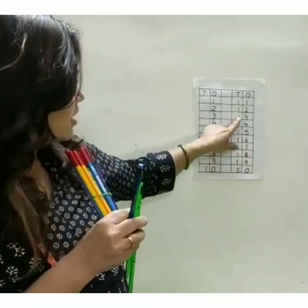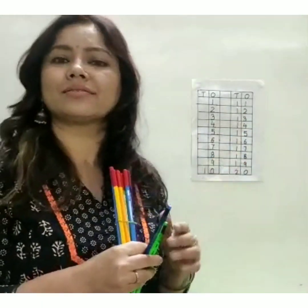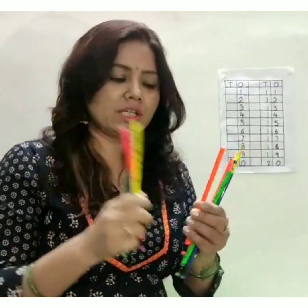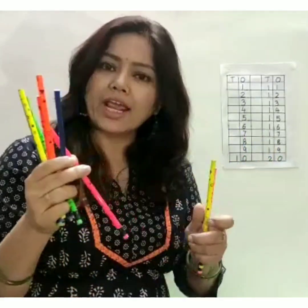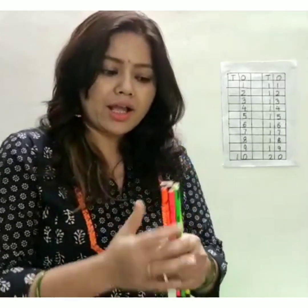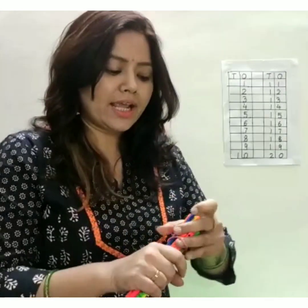Again we are going to count more objects and we will count after ten. So what comes after ten? Eleven, twelve, thirteen, fourteen, fifteen, sixteen, seventeen, eighteen, nineteen, and twenty. So again ten and I am going to tie it like this.